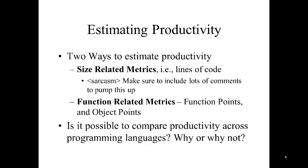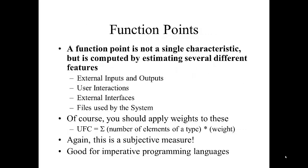The second way is to look at function-related metrics — these are function points and object points. A function point is not a single characteristic, but is computed by estimating several different features: external inputs and outputs, user interactions, external interfaces, and files used by the system. You apply weights to each type. The unadjusted function point count (UFC) equals the sum of the number of different types of each element multiplied by their weight. Simmons suggests that function point count depends upon who is giving the estimate, so this is a subjective measure.